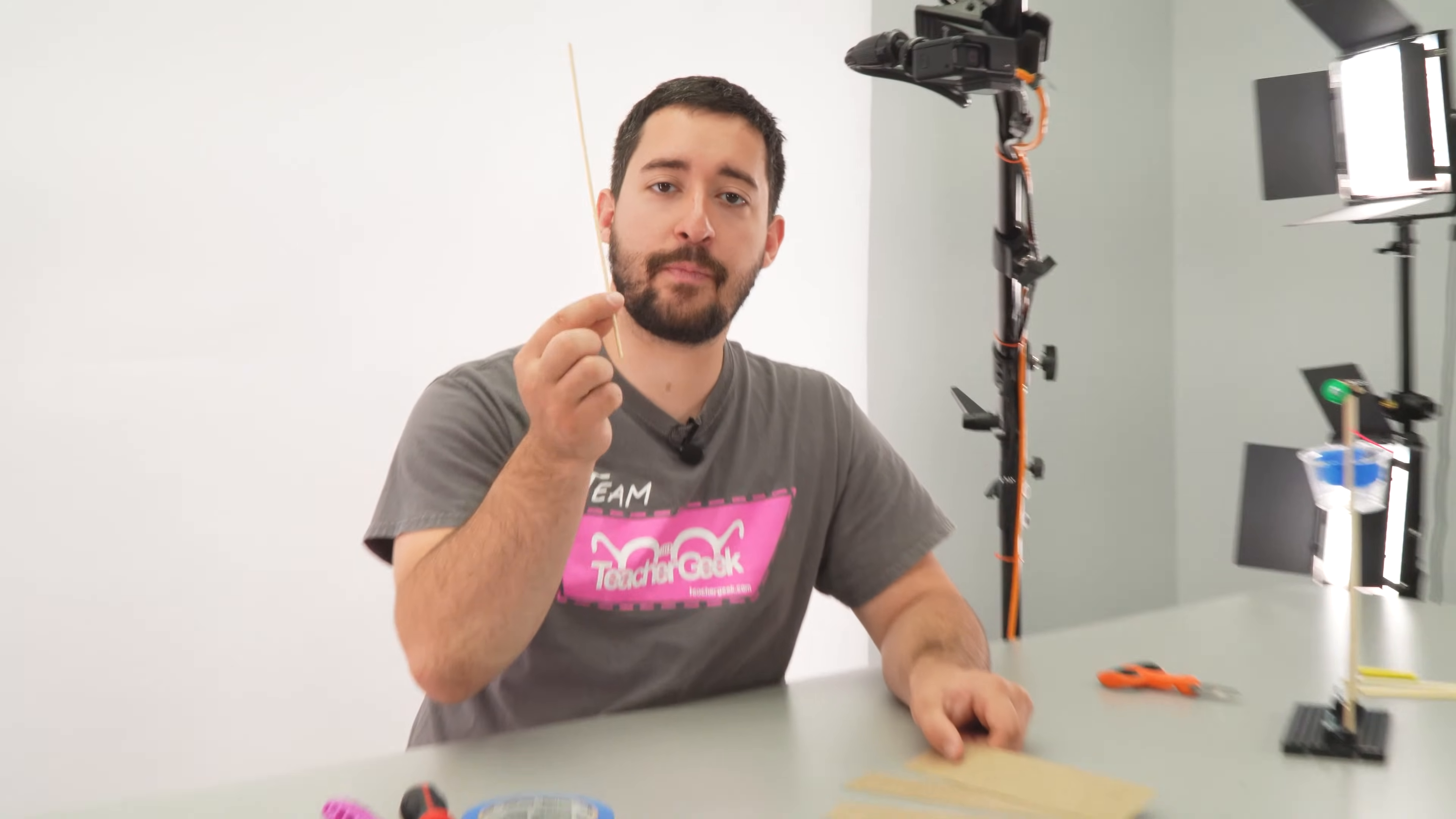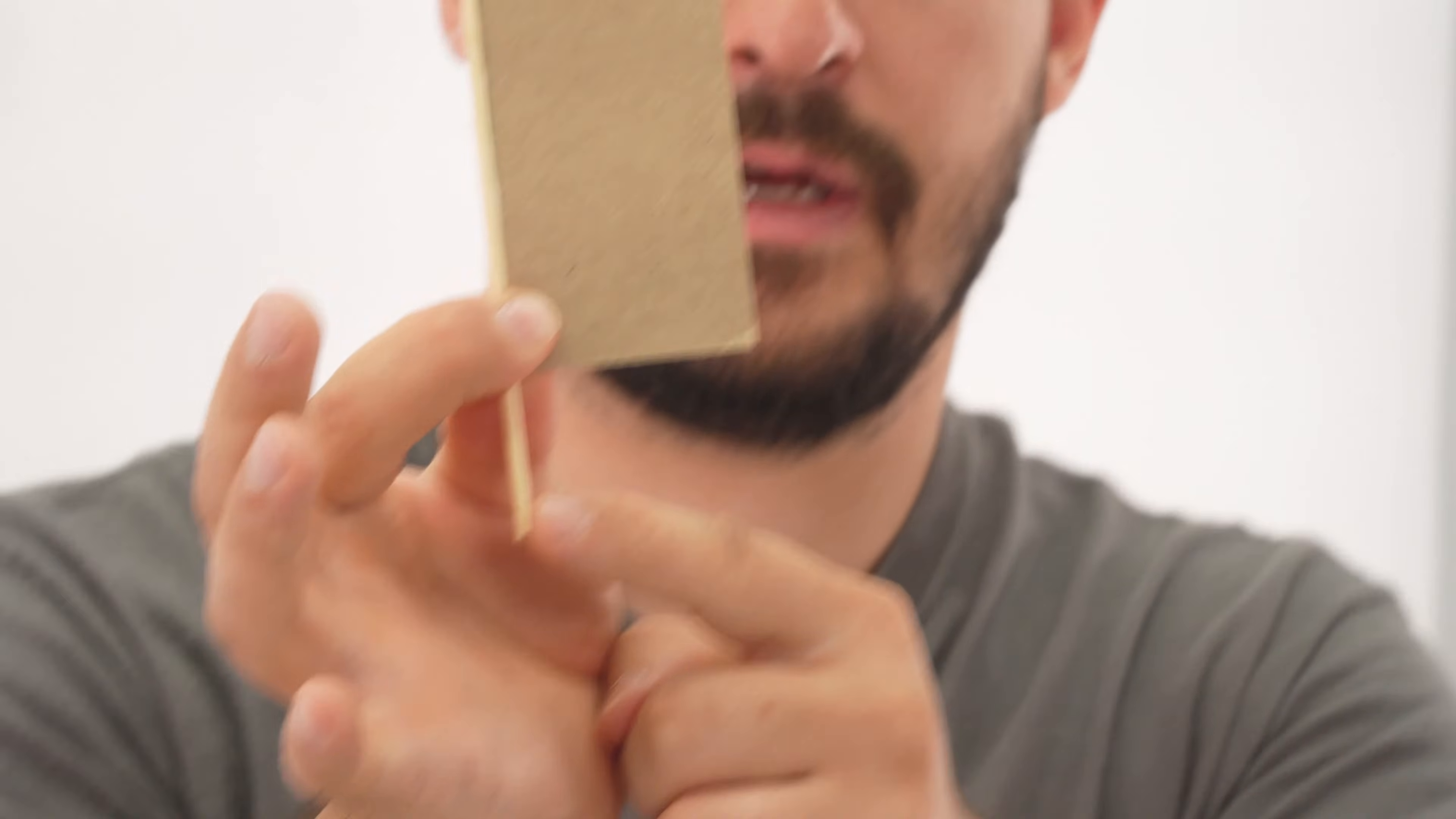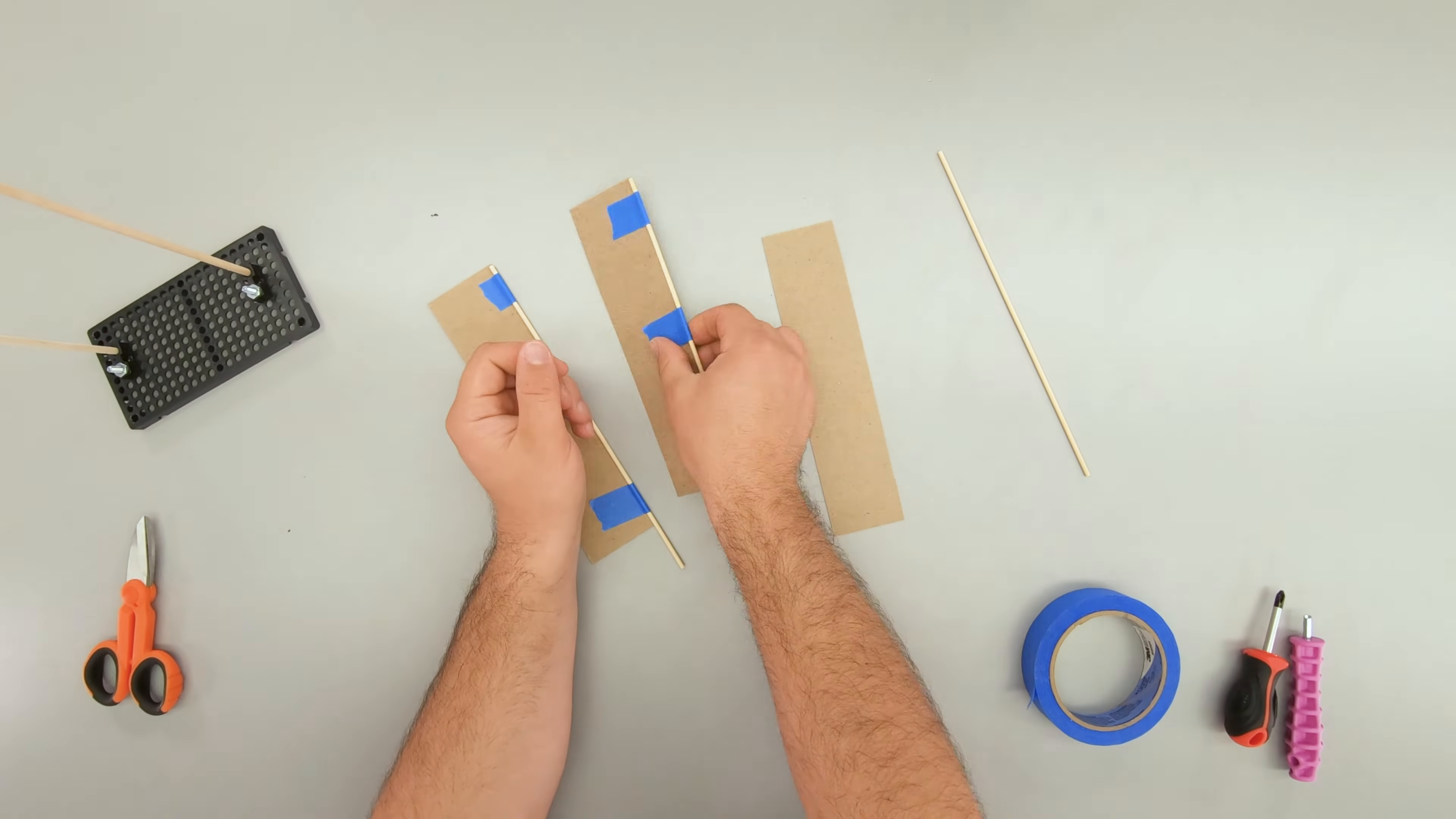To make your blades, you're going to tape a project stick to the edge of your chipboard so that there's some extra left at the bottom. This extra is going to get secured inside of your hub. All right, my blades are all set. Time to attach them to the wind lift.